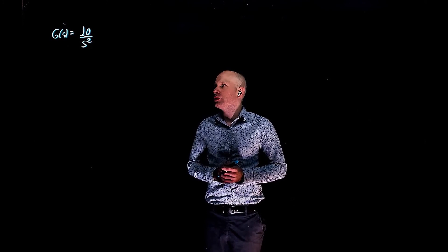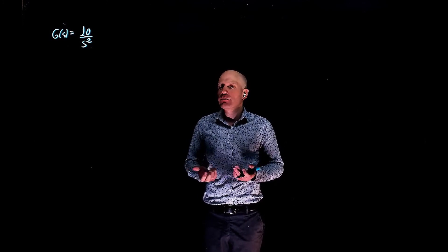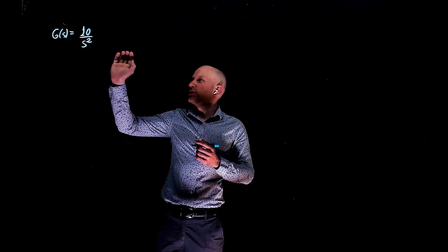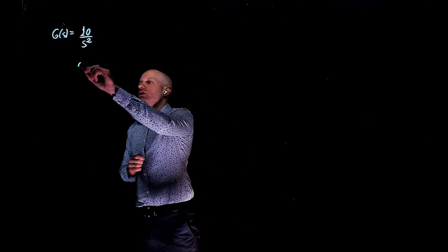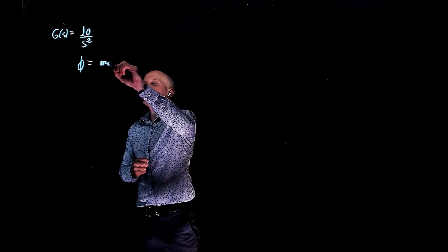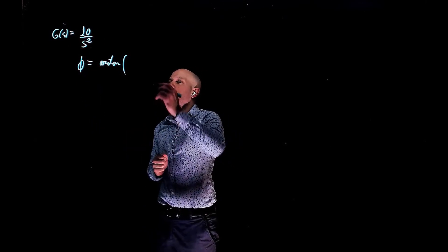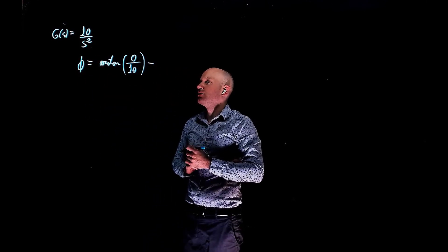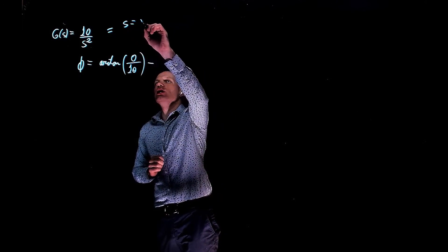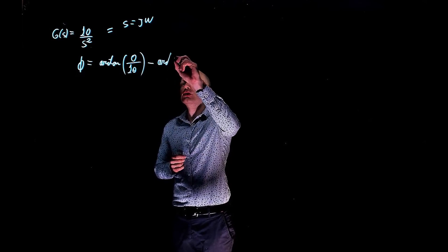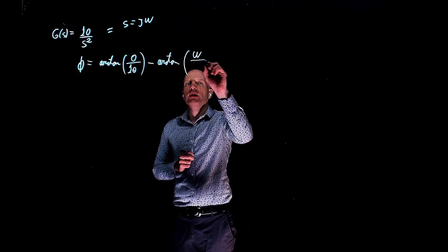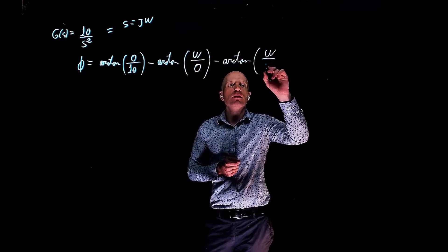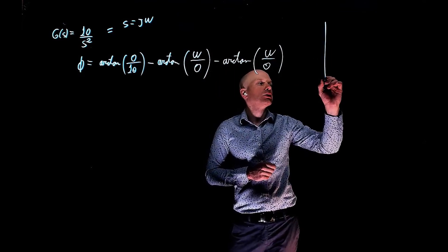Now what is the phase for this transfer function? We simply have two poles at the origin, so we know that the phase is negative 180 degrees. Let's calculate that. We have two elements — the phase on the numerator and the phase in the denominator. The phase of this transfer function would be the arctangent of the real part 0 divided by the imaginary part 10, minus the phase of the poles. Replacing s with j omega, we have two poles, each contributing arctangent of omega divided by 0.